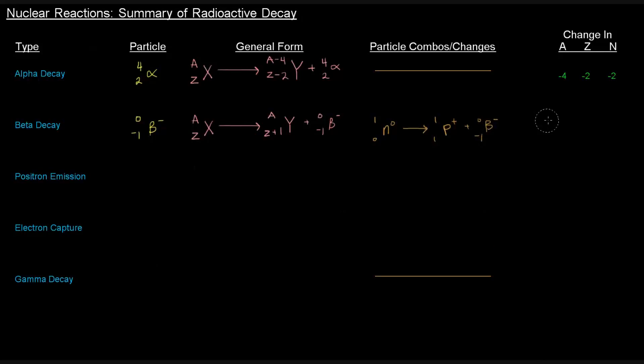The A stays the same, there's no change in A. Z increases by 1, and the N decreases by 1, because a neutron is turned into a proton and electron.